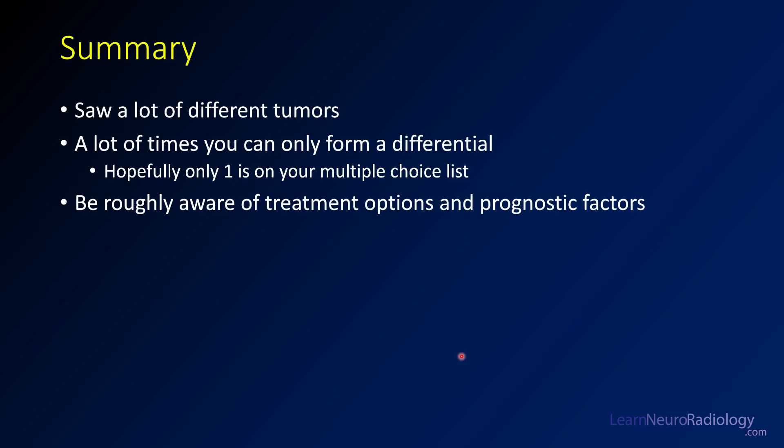That's the end of this case. We're going to go on to a summary of all the things you've seen in the cases. Hopefully you've seen a lot of these different tumors and can come up with a useful differential. In a multiple choice situation, they'll often only include one answer when there's overlap, like between a DNET and ganglioglioma. In these testing scenarios, you need to be roughly aware of treatment options — is it resection, radiation, or chemotherapy? Be aware of things that give you a better or worse prognosis and some of the genetic markers. If you're getting the diagnosis, you're probably getting most of the points.